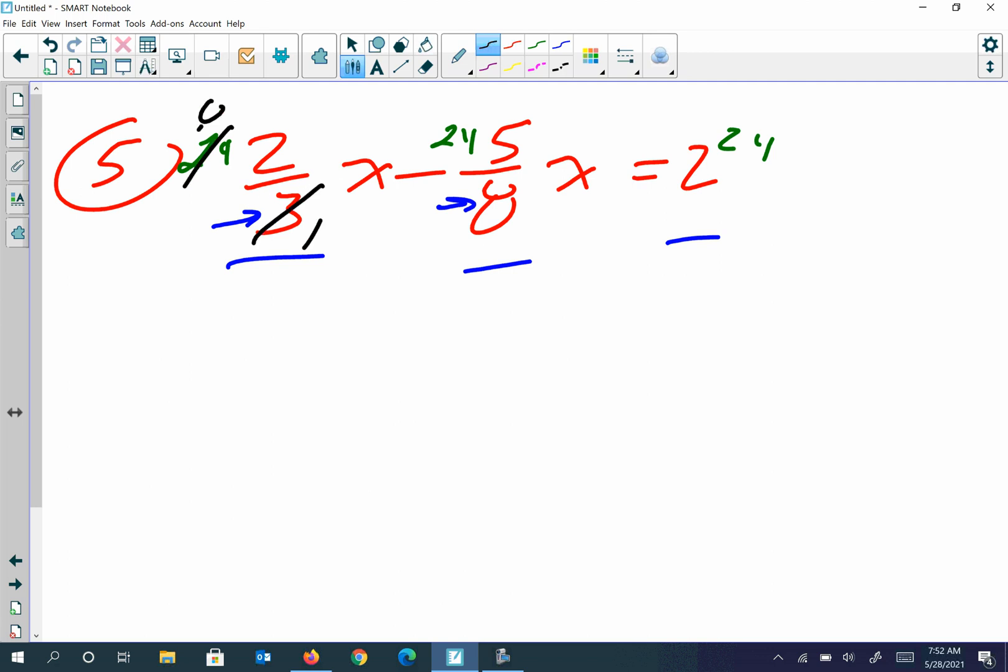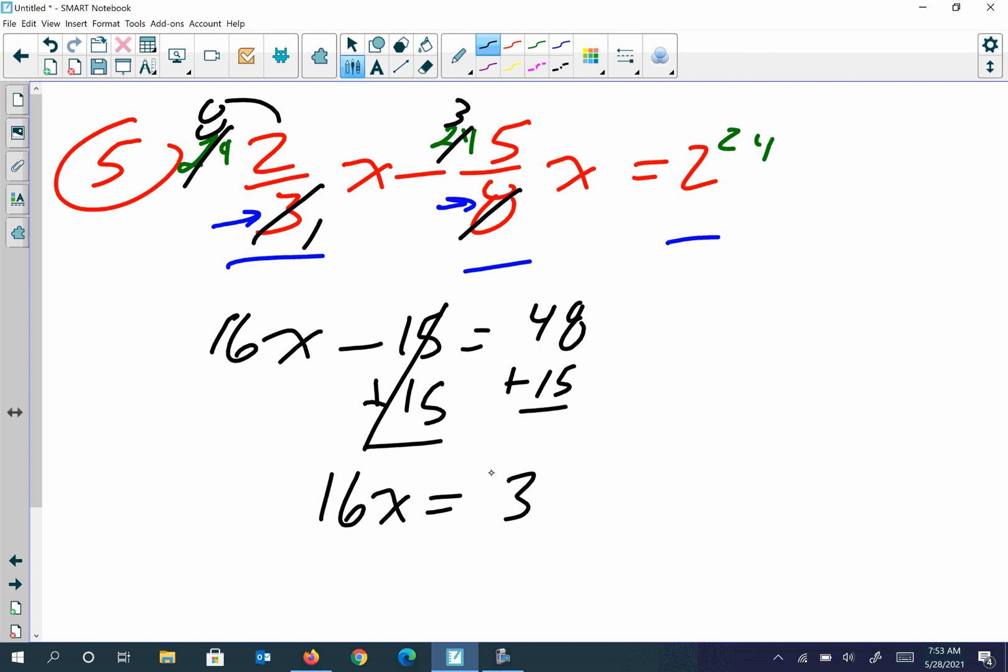So we do that: three goes into 24 eight times, multiply eight times two to get 16x, minus that goes another three times, so minus 15, is equal to 2 times 24 which is 48. Go ahead and add 15 to both sides. Those cancel, so I get 16x is equal to 63. Divide each side by 16. 63 will not reduce, so my answer is 63 over 16. Do not make it a mixed number.